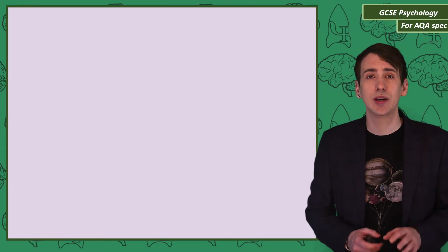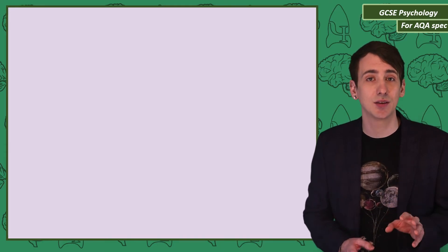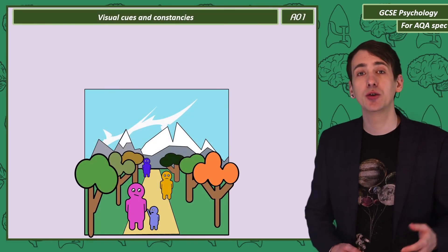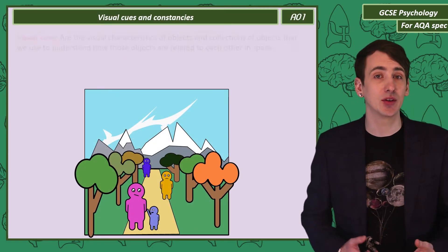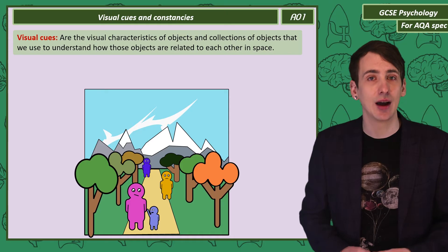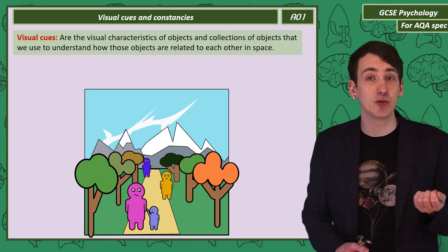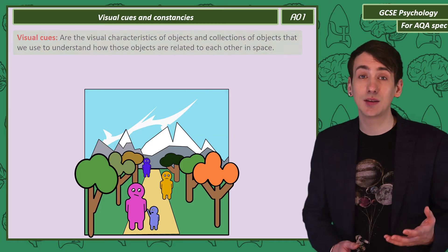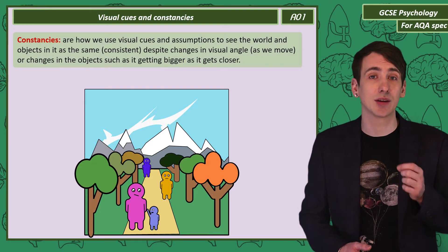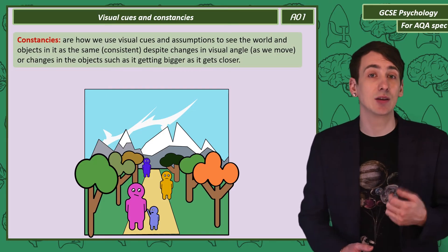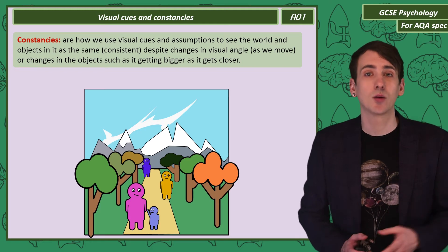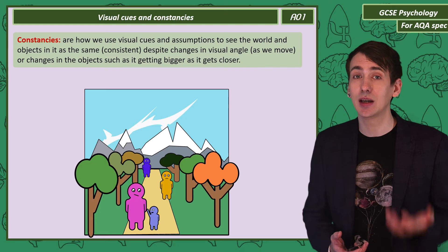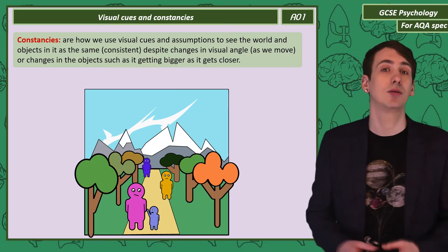To explain how these visual illusions work, we need to think about how your mind makes sense of the information received by the visual system. Visual cues are the tricks the brain uses to understand, from limited information, how objects are related to each other in three-dimensional space. Consistencies are the way the brain sees objects as the same despite changes in perspective and size — so you see a building as the same building even as it gets bigger and looks different from each side.